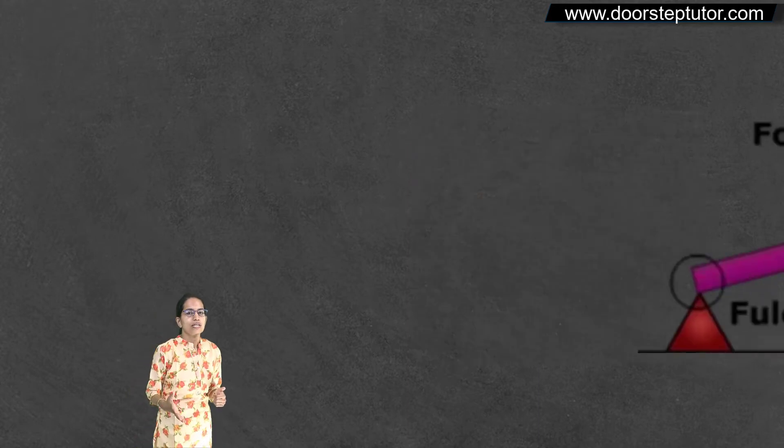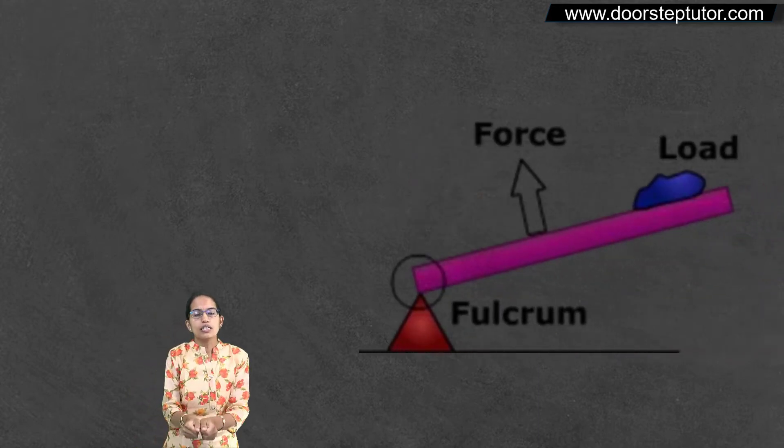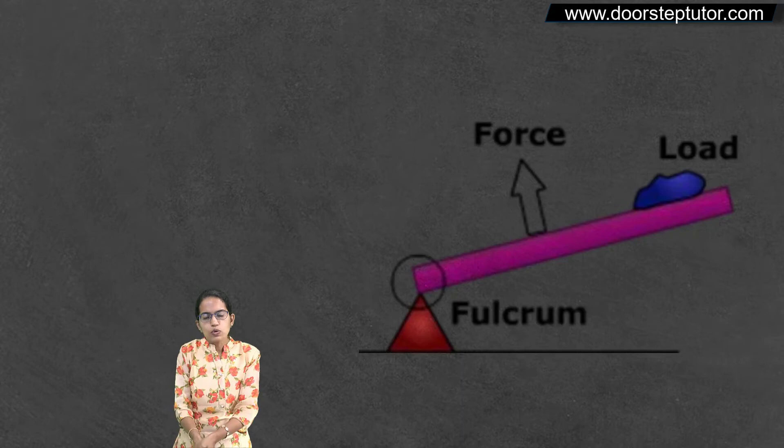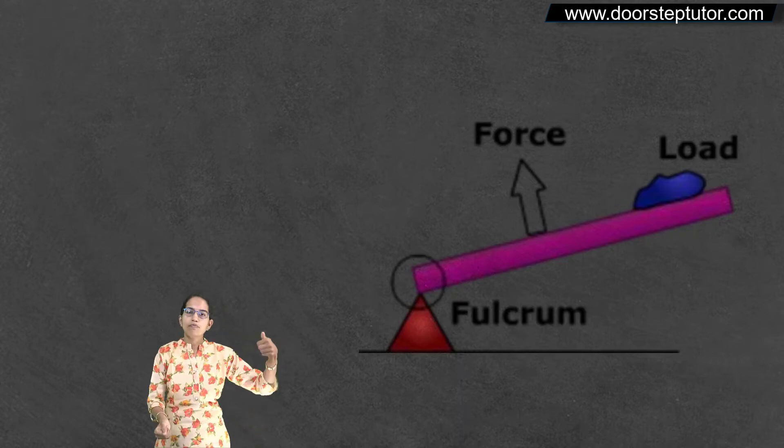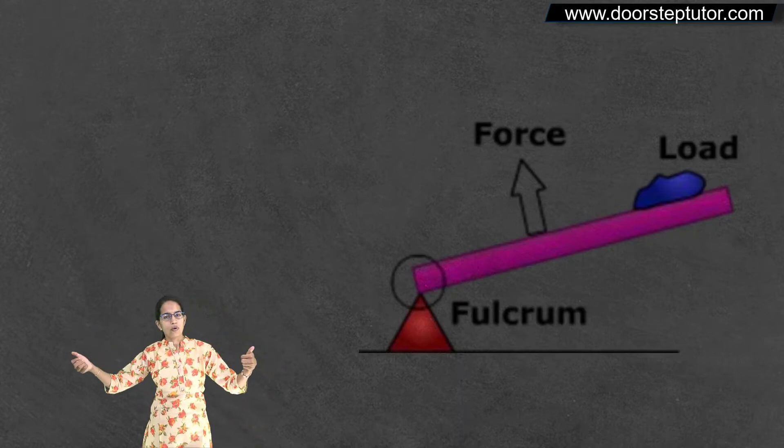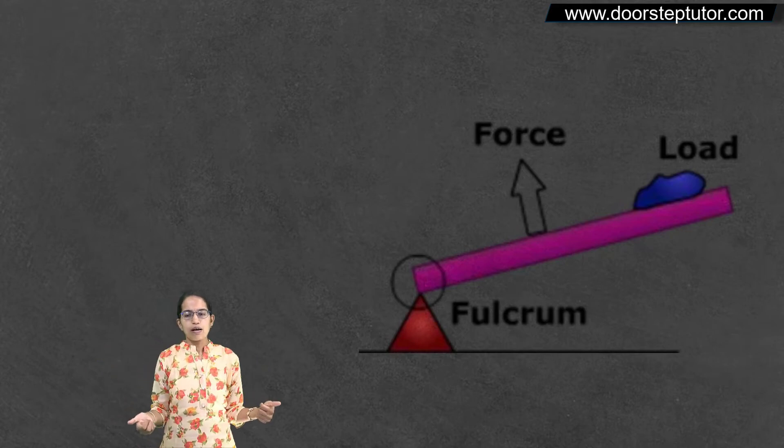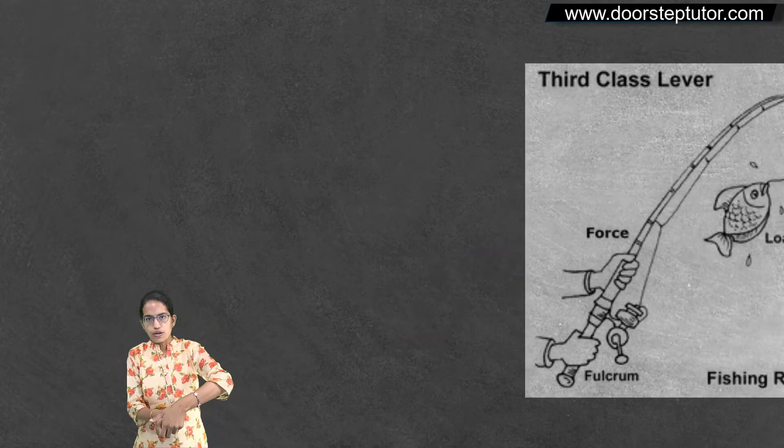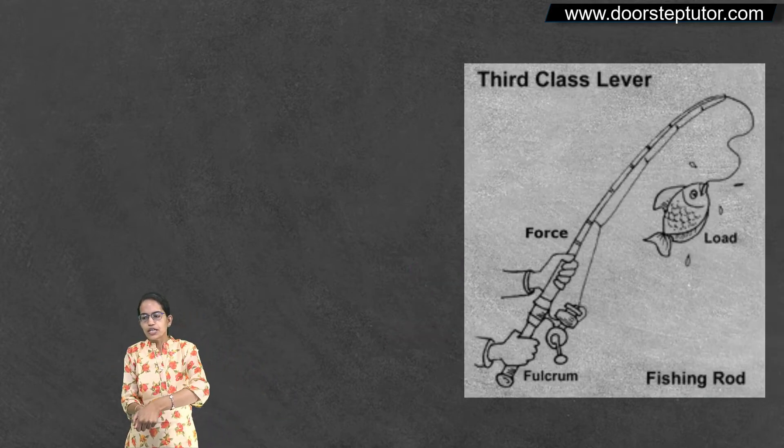Class 3 lever is an example where effort is in the middle. So in the middle you are providing the effort. At one point is the fulcrum and at other point is the load. What is a good example? The case of fishing rod. In the fishing rod your effort is in the middle.